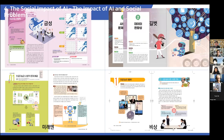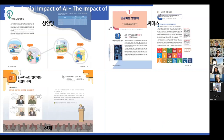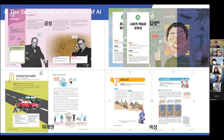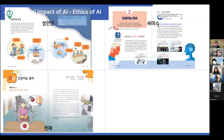The last section covers the social impact of AI, which contains AI ethics. We learn about how AI can affect the world and learn about data bias, which can affect AI models.